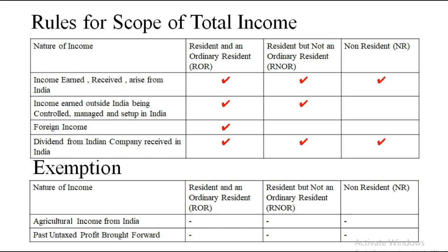There is a new rule: dividend from an Indian company, if it is received in India, will be chargeable to all heads. Prior to this it was exempted, but now it is completely chargeable. Two exemptions to keep in mind: agriculture income from India — no one pays tax. And past untaxed profit which is brought forward — again, no one pays tax.